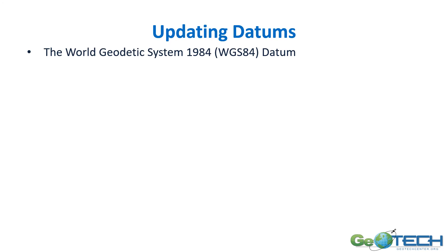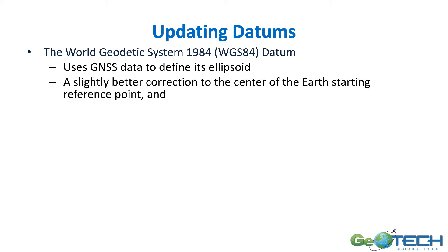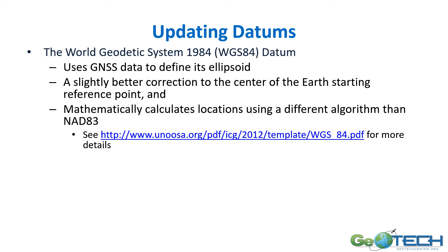Regarding updating datums: the World Geodetic System of 1984 (WGS 84) is a newer datum. It uses GNSS to define the ellipsoid, so it's similar to NAD 83, but it actually uses a slightly better correction for the center of the earth as a starting reference point and uses a different algorithm to calculate location than what was used in NAD 83. There's also a good reference about how that was changed and what it means.